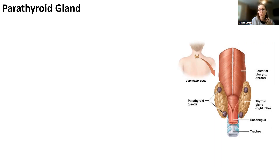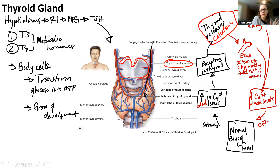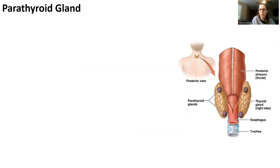Remember, the thyroid gland makes calcitonin to help regulate blood calcium levels when they're too high. So when blood calcium levels are too low, we also need something that's going to help us regulate that.